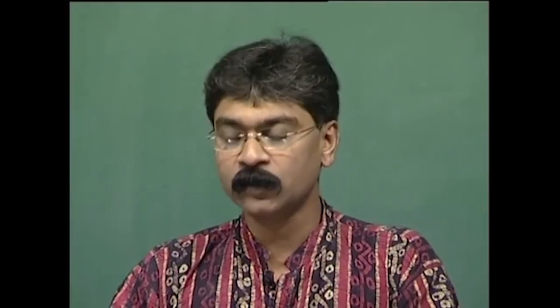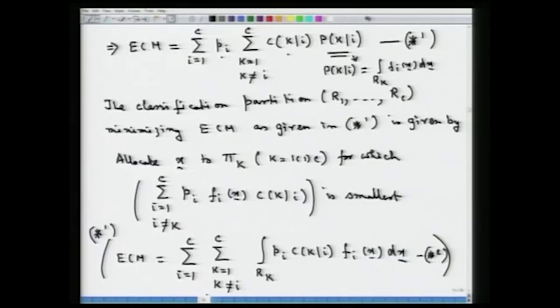In the last lecture, we had looked at various types of discriminant functions — the rules that one can derive when we have a multi-population problem. Specifically, we had discussed the problem where if we have c populations π₁, π₂, ..., πc, and under a general classification problem considering costs of misclassification and prior probabilities, what sort of optimum rules are desirable. We had derived the rule which would minimize the expected cost of misclassification under such a c-population setup.